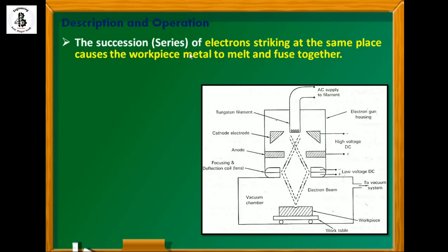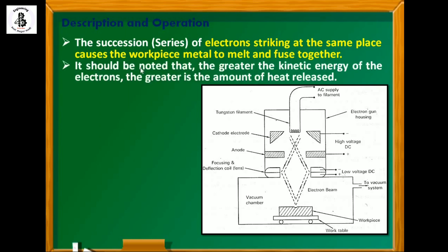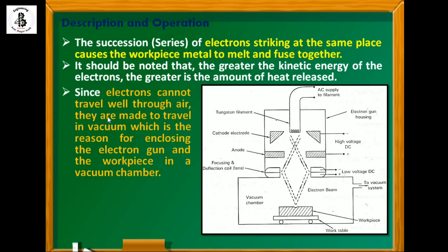A series of electrons striking at the same place causes the workpiece metal to melt and fuse together, completing the joining process. The greater the kinetic energy of the electrons, the greater the amount of heat released. Since electrons cannot travel well through air, they are made to travel in a vacuum, which is the reason for enclosing the electron gun and workpiece in a vacuum chamber. Without the vacuum chamber, the electron beam would scatter and could not be concentrated onto a single spot to melt the base metal.